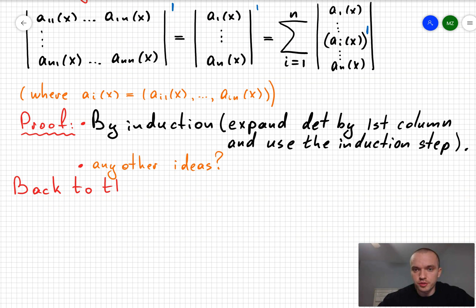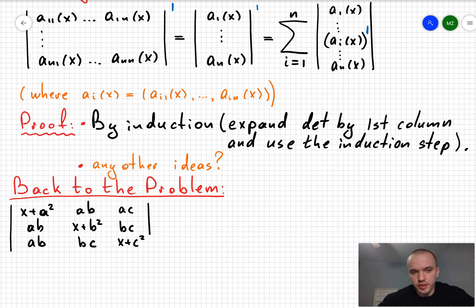Now let's come back to the original problem when I was given the determinant of the form x squared plus a squared, ab, ac; ab, x plus b squared, bc; ab, bc, x plus c squared. And what do I want to do? I want to find the derivative of the determinant.